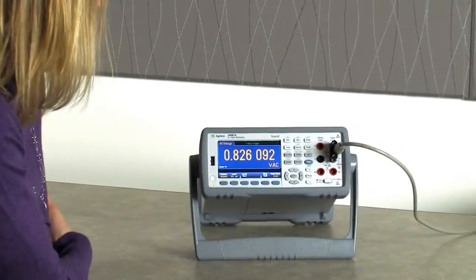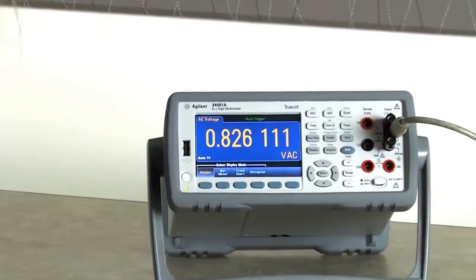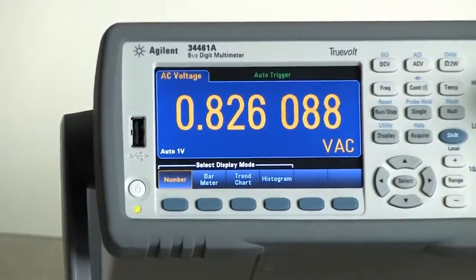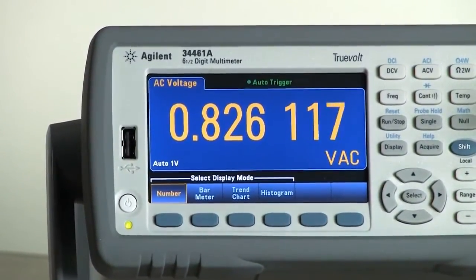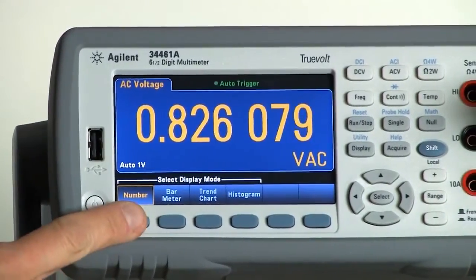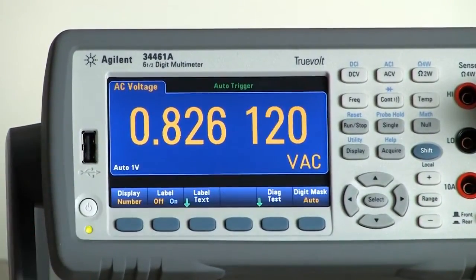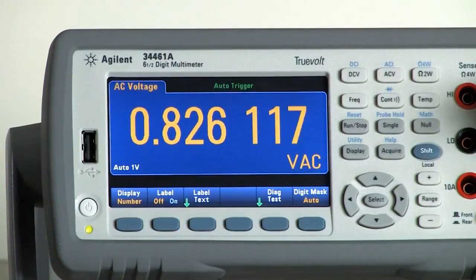Simply go into the display mode on the DMM and you will see that there are four different options on the 34461 for how you display your measurements. If you want the traditional number based view you can choose number mode and that will give you our traditional large numeric display.